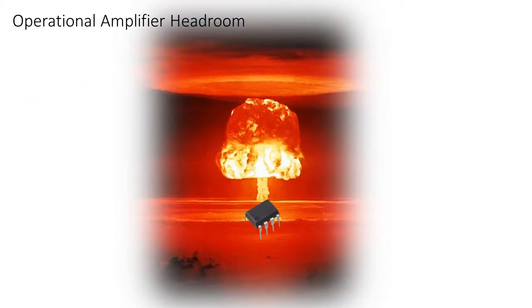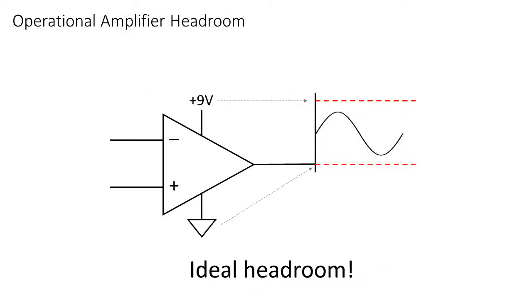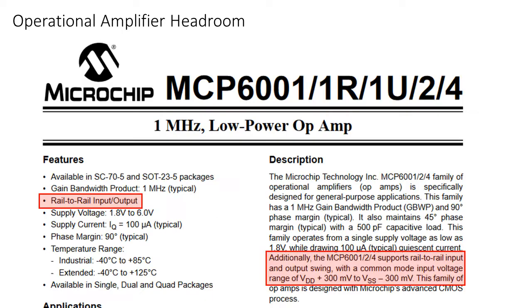But don't be afraid, we're not doomed in a world where these horrible limitations exist in all op-amps. Op-amps that are able to get their output very close to the supply rails and have almost optimal headroom are called rail-to-rail op-amps. For example, the MCP-6000 series op-amps.